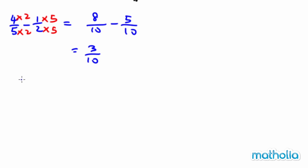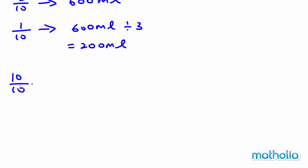Now, three over ten is 600 milliliters. Can I find one over ten? 600 milliliters divided by three, you have 200 milliliters. So, my job now is to find ten out of ten. It will be 200 milliliters multiplied by ten. It will give me two thousand milliliters.